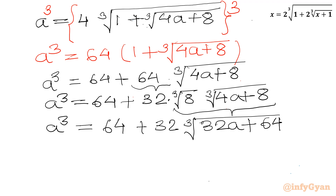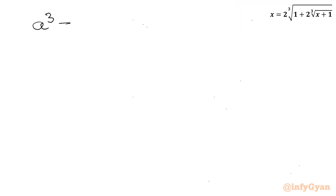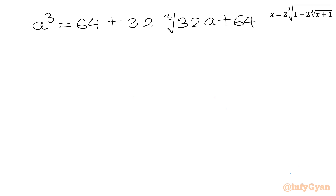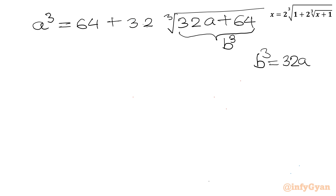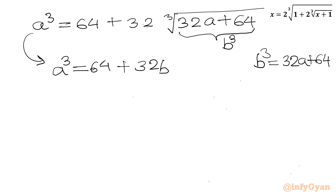Now I will use a second substitution. The radicand inside is cube root of 4a plus 8. I will call this radicand equal to b cubed, so cube root of 4a plus 8 equals b. Let me write the resulting equation: b cubed equal to 64 plus 32 times a.